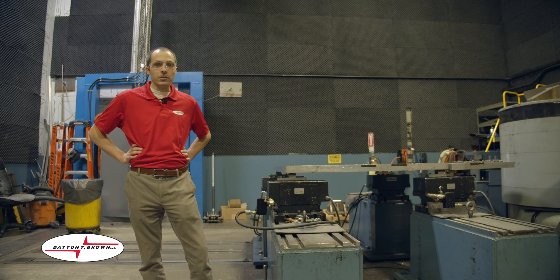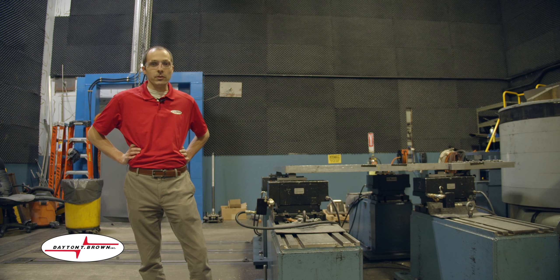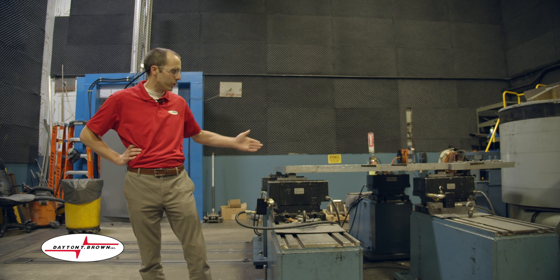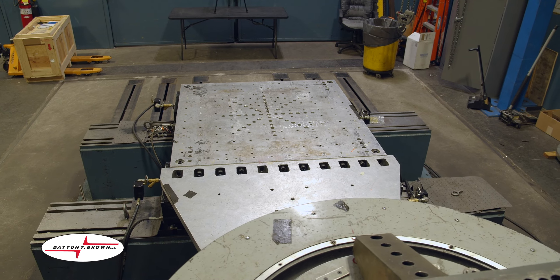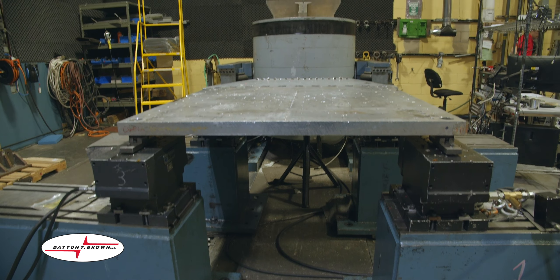This shaker, as you can see, does not have an integrated slip table. This allows us to use hydropads, as you can see here on our 48-inch plate. This allows us to test small items on a 36-by-36-inch plate all the way up to a 12-foot-by-8-foot plate.